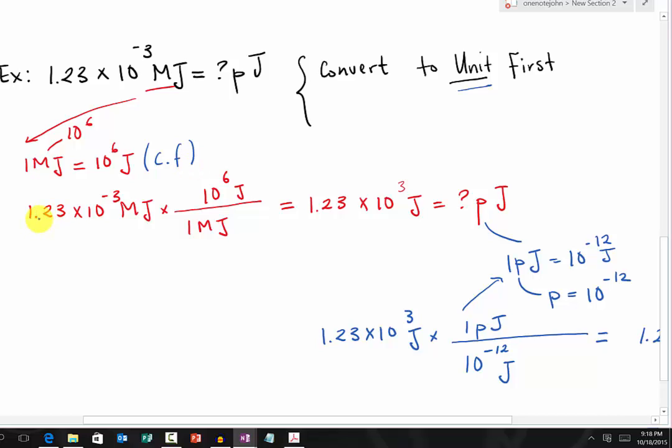We have 1.23 times 10 to the negative 3 megajoule, which is our given, and we times this conversion factor. Megajoule is right here, so this megajoule part will be on the bottom because we need to cancel it out. Therefore, the other side will be on top, the joule will be on top.